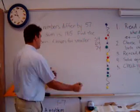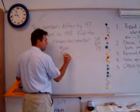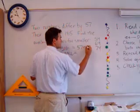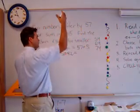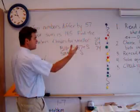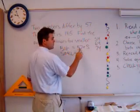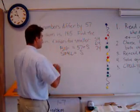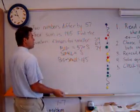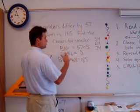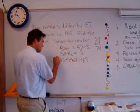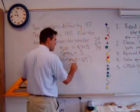We have a big number and a small number. We know the big is 57 more than the small — they differ by 57. So I've already done step two. The small number is S, and the big is 57 plus S. Their sum is 185, so big plus small is 185. I choose the variable S; I already have small as S and big expressed as S.